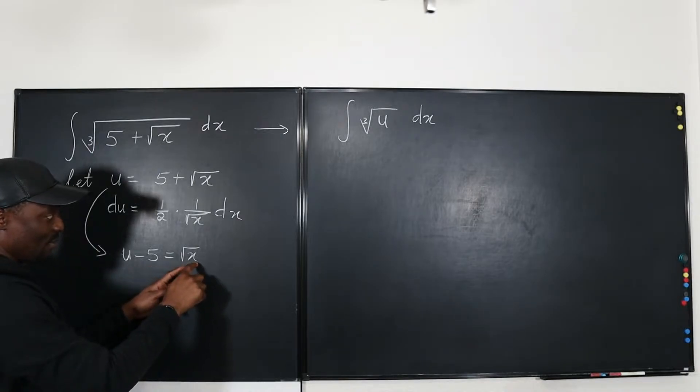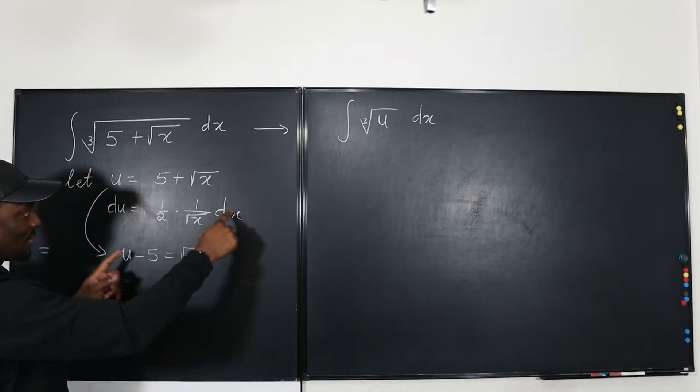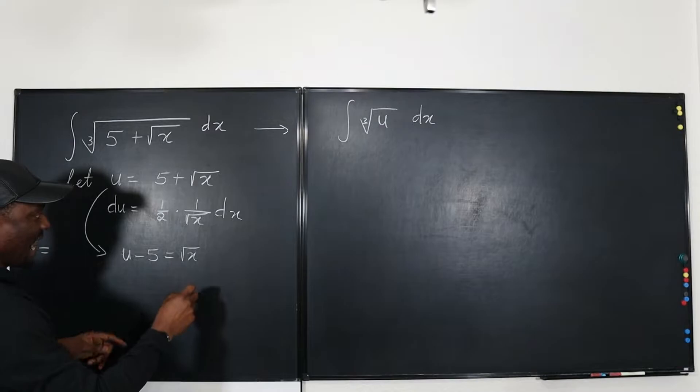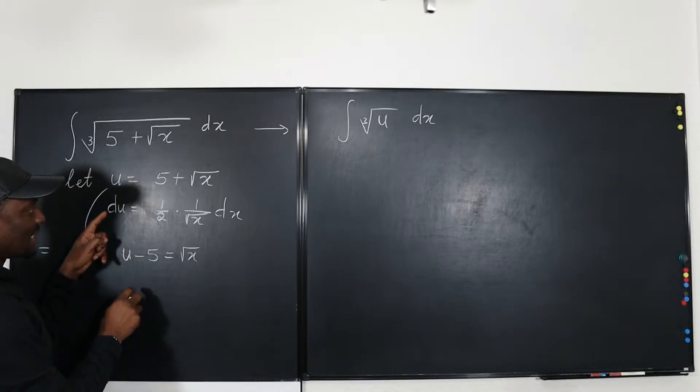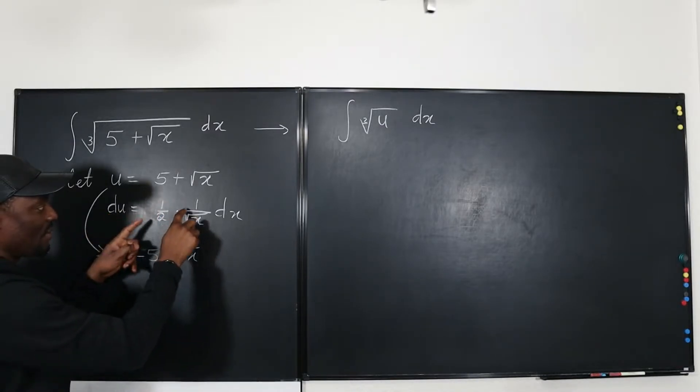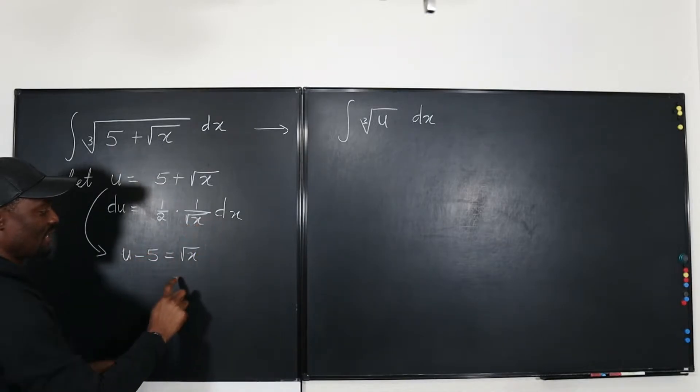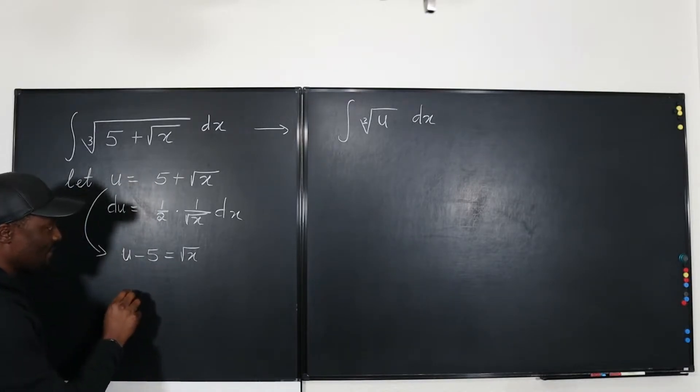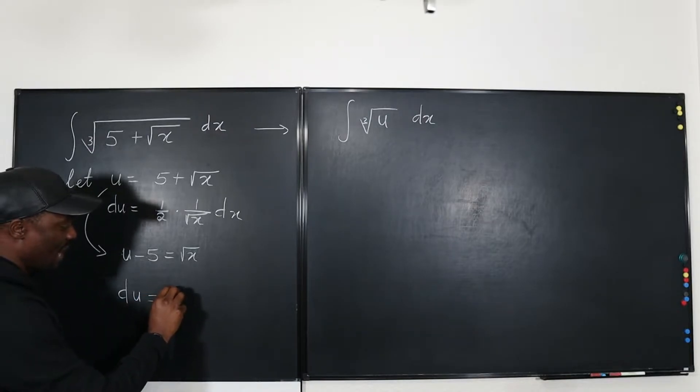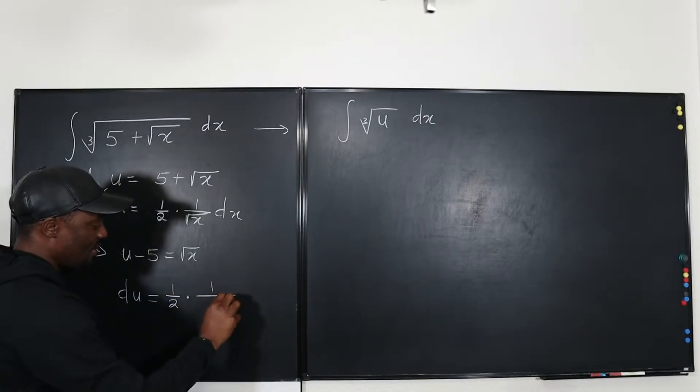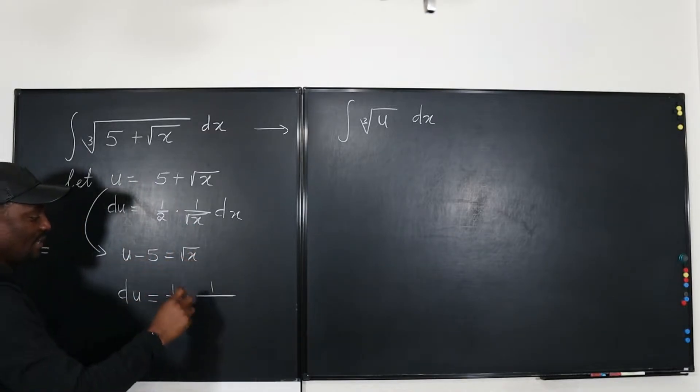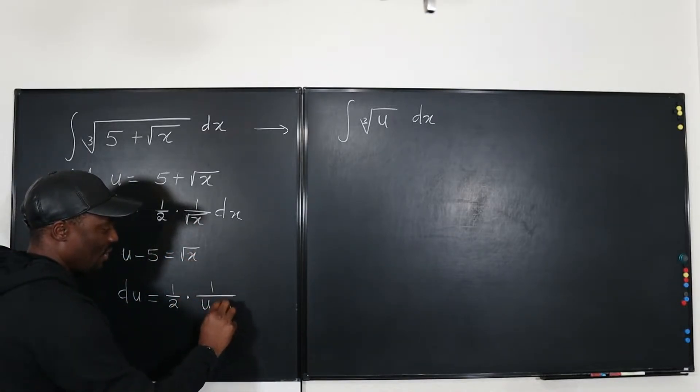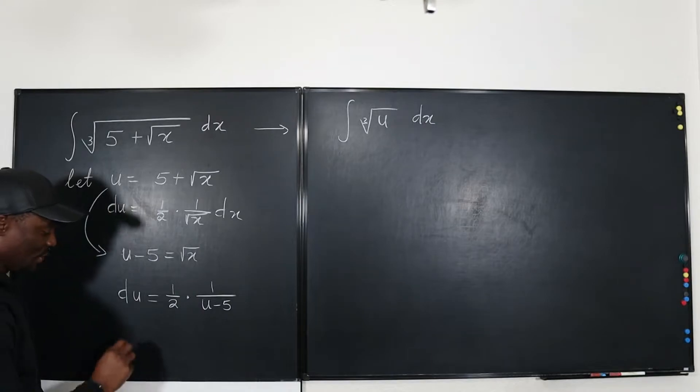u minus 5 is the square root of x. So this expression that we have here can actually be written as du equals one half of one over - instead of writing square root of x you're going to write u minus 5. So here we can say that du equals one half of one over - what is square root of x again? It's u minus 5. Oh, that's beautiful.